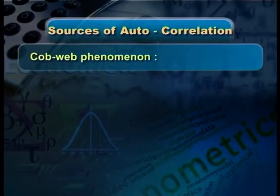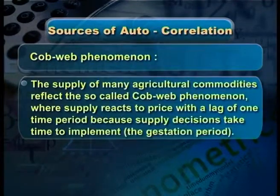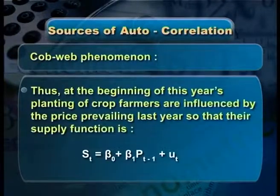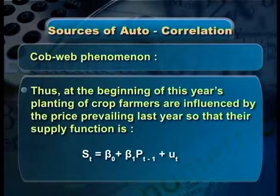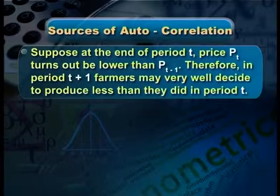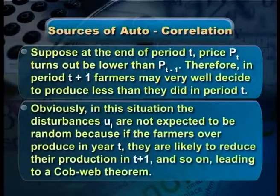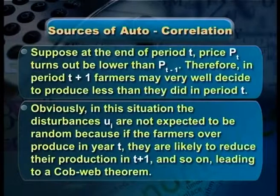Another important cause is the cobweb phenomenon. This can be found especially in the supply of many agricultural commodities, where supply reacts to price with a lag of one time period because supply decisions take time to implement. At the beginning of this year's planting, farmers are influenced by the price prevailing last year, so their supply function is: st = β₀ + β₁·p(t−1) + ut. If at the end of period t the price turns out lower than p(t−1), farmers may decide to produce less in period t+1, leading to a cobweb pattern where disturbances are not random.